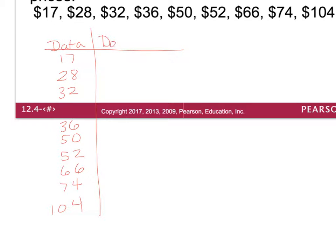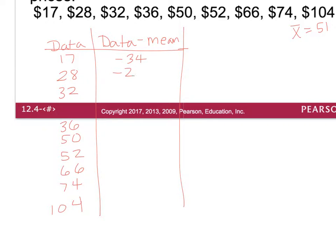Before subtracting the mean from each data point, we need to find the mean. Adding all 9 values gives 459, and dividing by 9 gives an average — x-bar — of 51. Now I subtract 51 from each data point: 17−51, 28−51, 32−51, 36−51, 50−51, 52−51, 66−51, 74−51, and 104−51, and place those results in the second column.